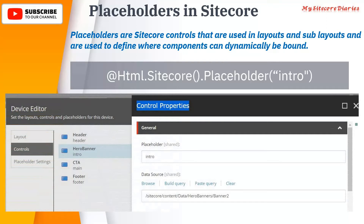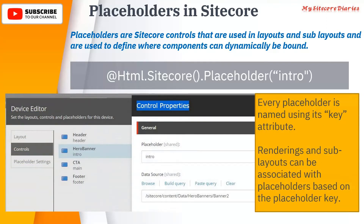Wherever you want authors to add components, you have to provide them the placeholders. If you see the presentation details, every control or rendering will have a placeholder like this. The important thing in the placeholder is the key — the key should be unique, and every placeholder is named using its key attribute.